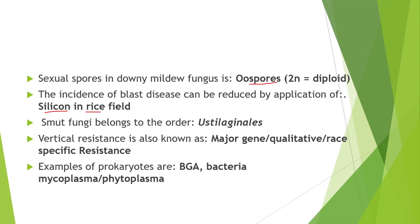Smut fungi belong to the order Ustilaginales. Vertical resistance is also known as major gene, qualitative, and race-specific resistance. Examples of prokaryotes are blue-green algae, bacteria, mycoplasma, and phytoplasma.